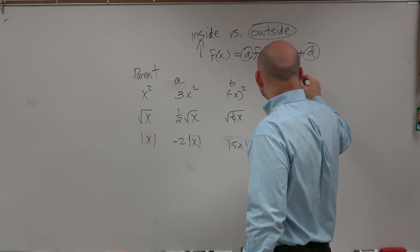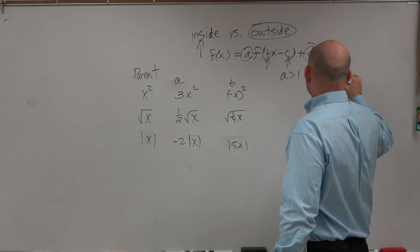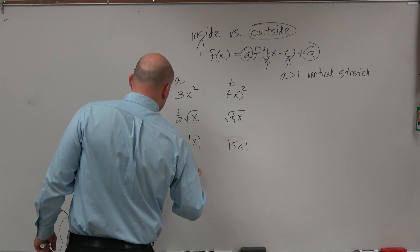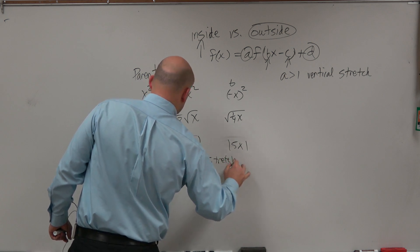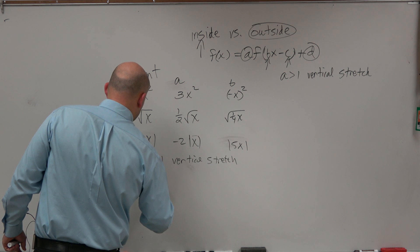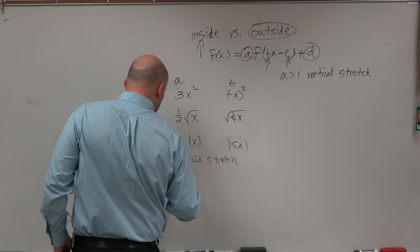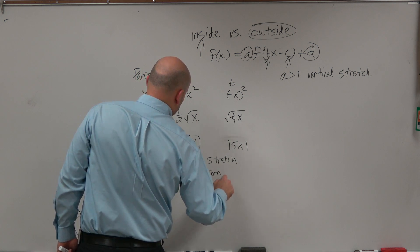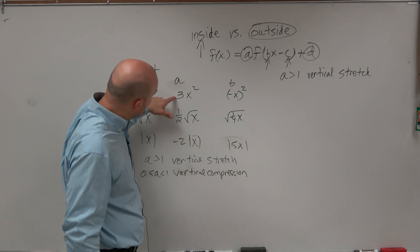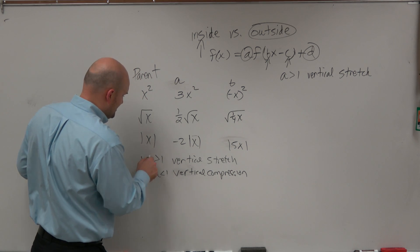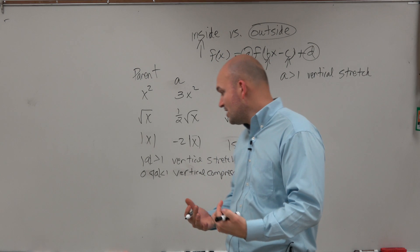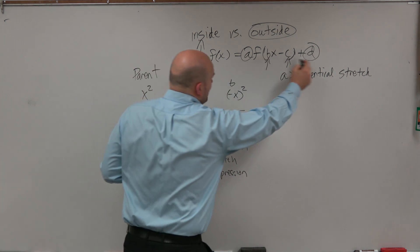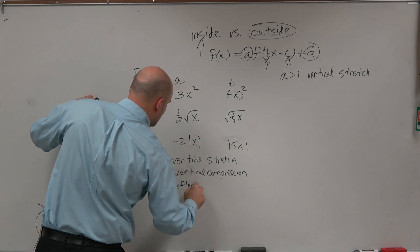When a is greater than 1, you have a vertical stretch. When a is greater than 0 but less than 1, you have a vertical compression. It's actually the absolute value of a that determines stretch or compression — the negative sign doesn't affect that. But when a is less than 0, you have a reflection over the x-axis.